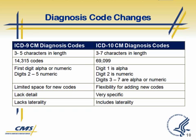Here's the big change: we go from a minimum 3- to 5-character length to a 7-character length. The codes go up from 14,000 plus to almost 70,000 codes. There is substantial flexibility that allows them to add additional codes, and the detail is incredibly specific.